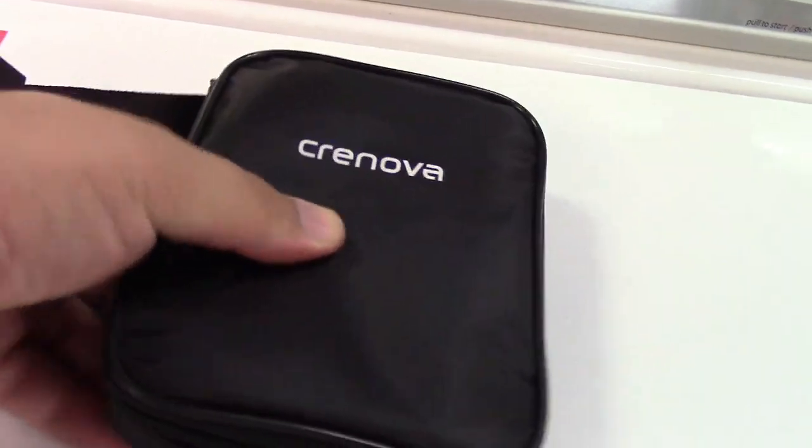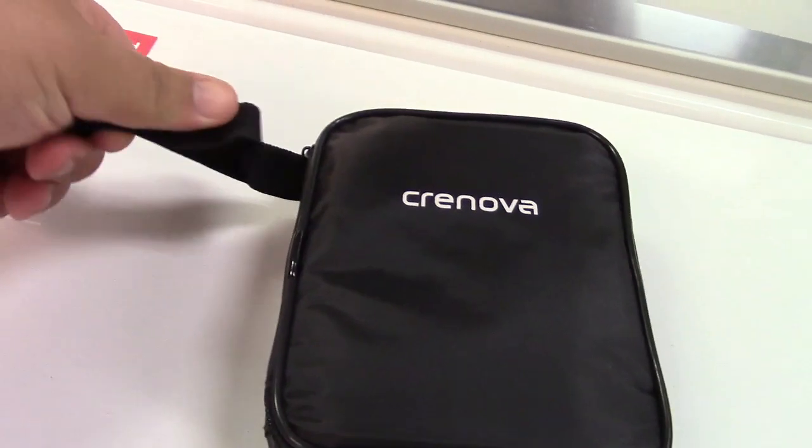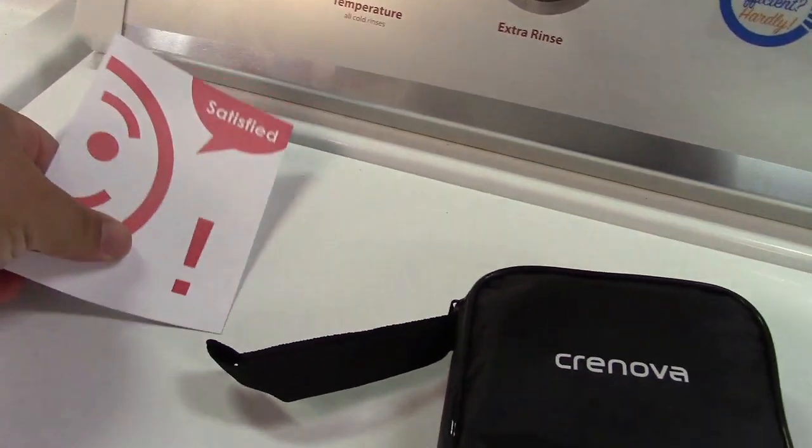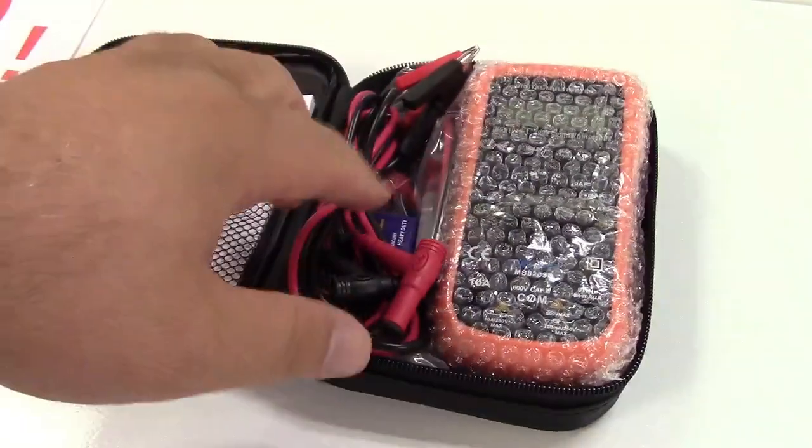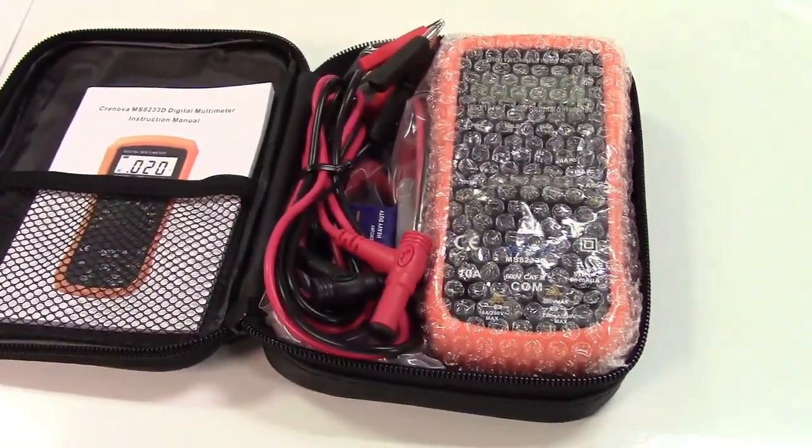It comes in a nice little padded case with a wrist strap and a card. In the pouch we find the instruction manual, the meter, some leads, and the battery, which is included.